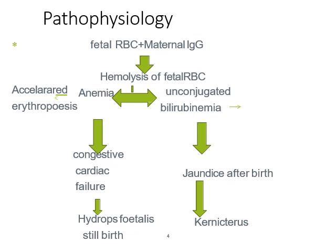So we have unconjugated hyperbilirubinemia. Fetal RBCs coated with maternal IgG are destroyed by fetal macrophages, causing hemolytic anemia. The hemoglobin breakdown produces unconjugated bilirubin, which causes jaundice. When bilirubin levels are very high, this gives us kernicterus.